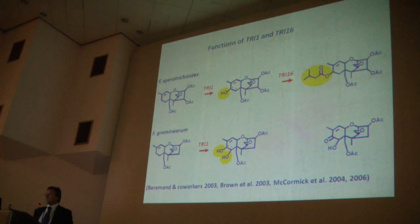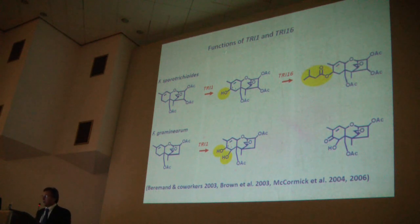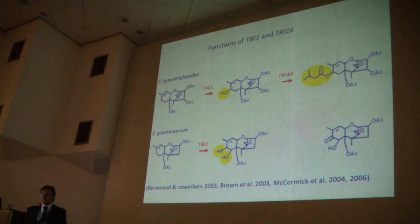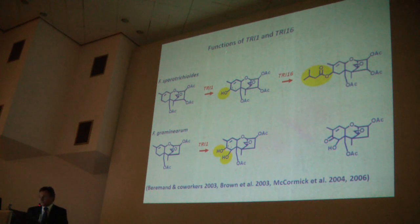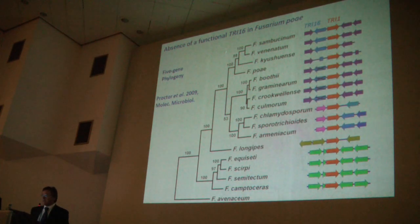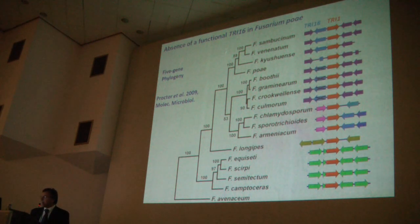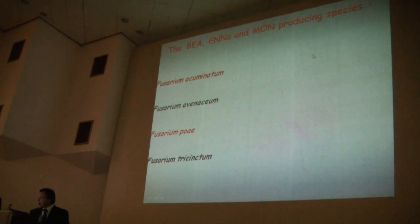Fusarium poae is probably incorrectly reported as a T2 and HT2 producing species. My co-workers Bellezza, Raffo, and colleagues have shown that gene Tri316 is a key gene for T2 biosynthesis in Fusarium. A work just published in Molecular Microbiology by Proctor and co-workers has clearly shown that Fusarium poae has a specific characteristic related to this.